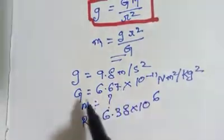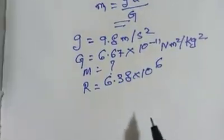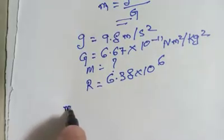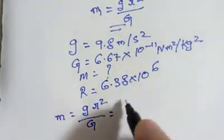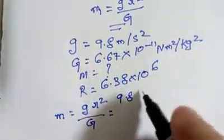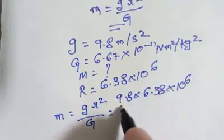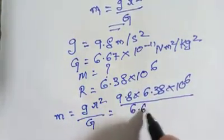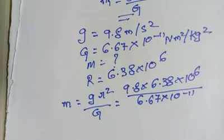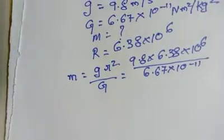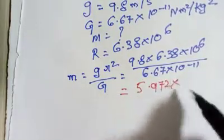We plug in these values into M equals to g r squared over G: g is 9.8, r is 6.38 times 10 to the power 6, and G is 10 to the power minus 11. When we solve this maths out, we find this is equal to 5.972 multiplied by 10 to the power 24 kilograms.